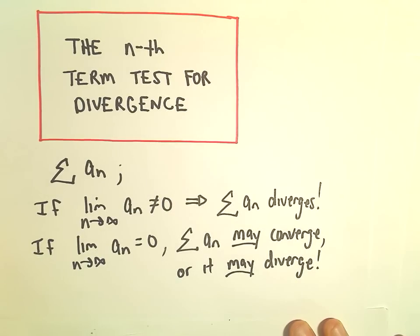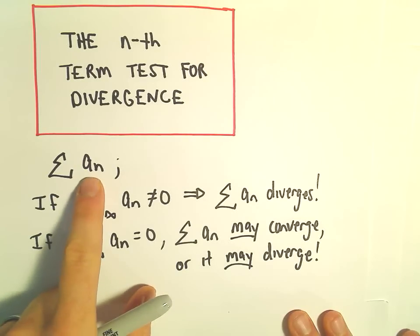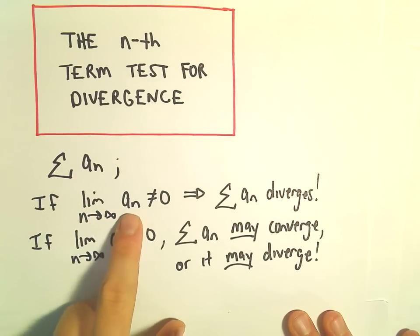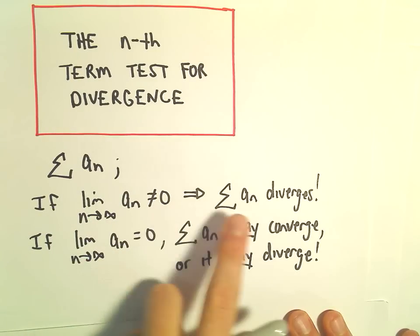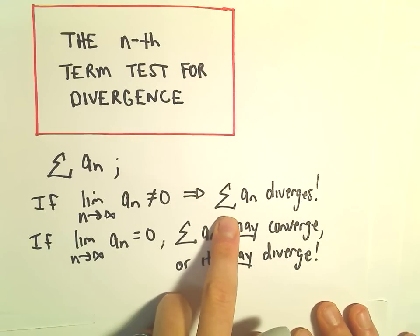So what the nth term test for divergence says is you've got some series with some formula a sub n. It says if you take the limit as n goes to infinity of the a sub n's, if that is not equal to zero, then your series automatically diverges. Boom, you're done. You can go on to the next problem.